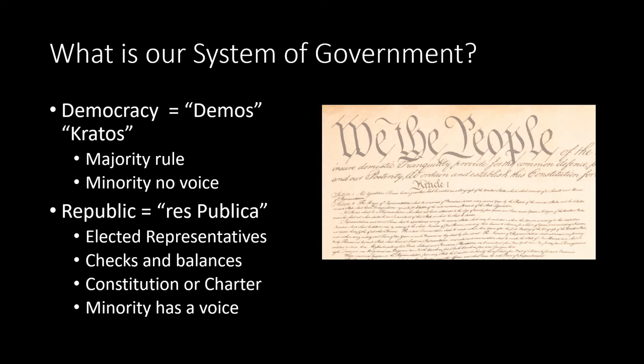So the first thing we're going to look at is what is our system of government — what kind of government do we live under? Is it a democracy, which comes from the Greek words demos meaning people and kratos meaning power — the power of the people? This political ideology was born in ancient Athens in 500 BC by Cleisthenes, who was known as the father of democracy. Under a pure democracy, the power is with the people to make laws through the majority, but the minority has no voice.